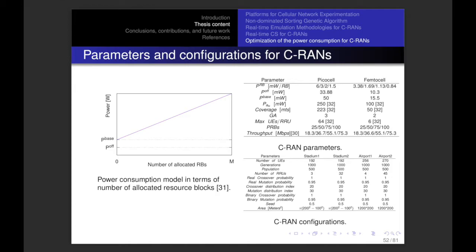In the right part, we have parameters for picocells and femtocells, such as PRB, P_max, base coverage, gain, maximum number of UEs and remote radio units, maximum number of physical resource blocks, and throughputs. For the current configuration, different scenarios — stadium 1, stadium 2, airport 1, and airport 2 — have different numbers of UEs but the same number of generations and population size.